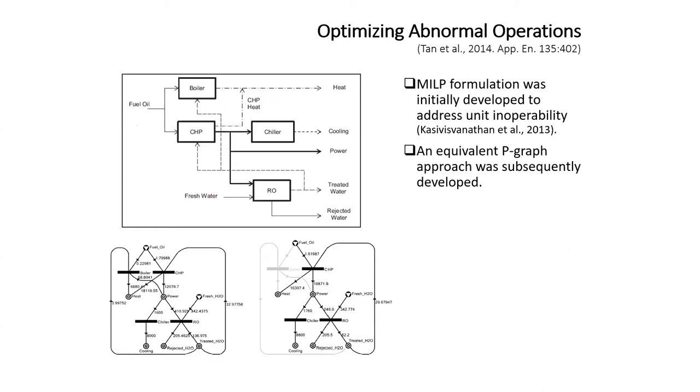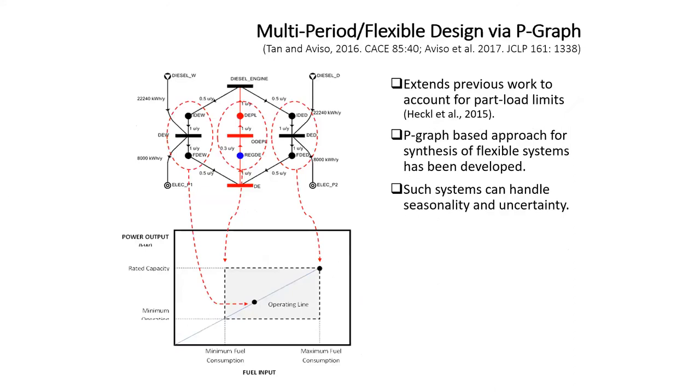In 2014, I developed with some colleagues a P-graph model for optimizing abnormal operations in a polygeneration plant. The abnormal operations can occur, for example, when we have to shut down parts of the plant for repair or maintenance while keeping the rest of the plant running and trying to find the operating state that minimizes economic losses while repairs are being done.